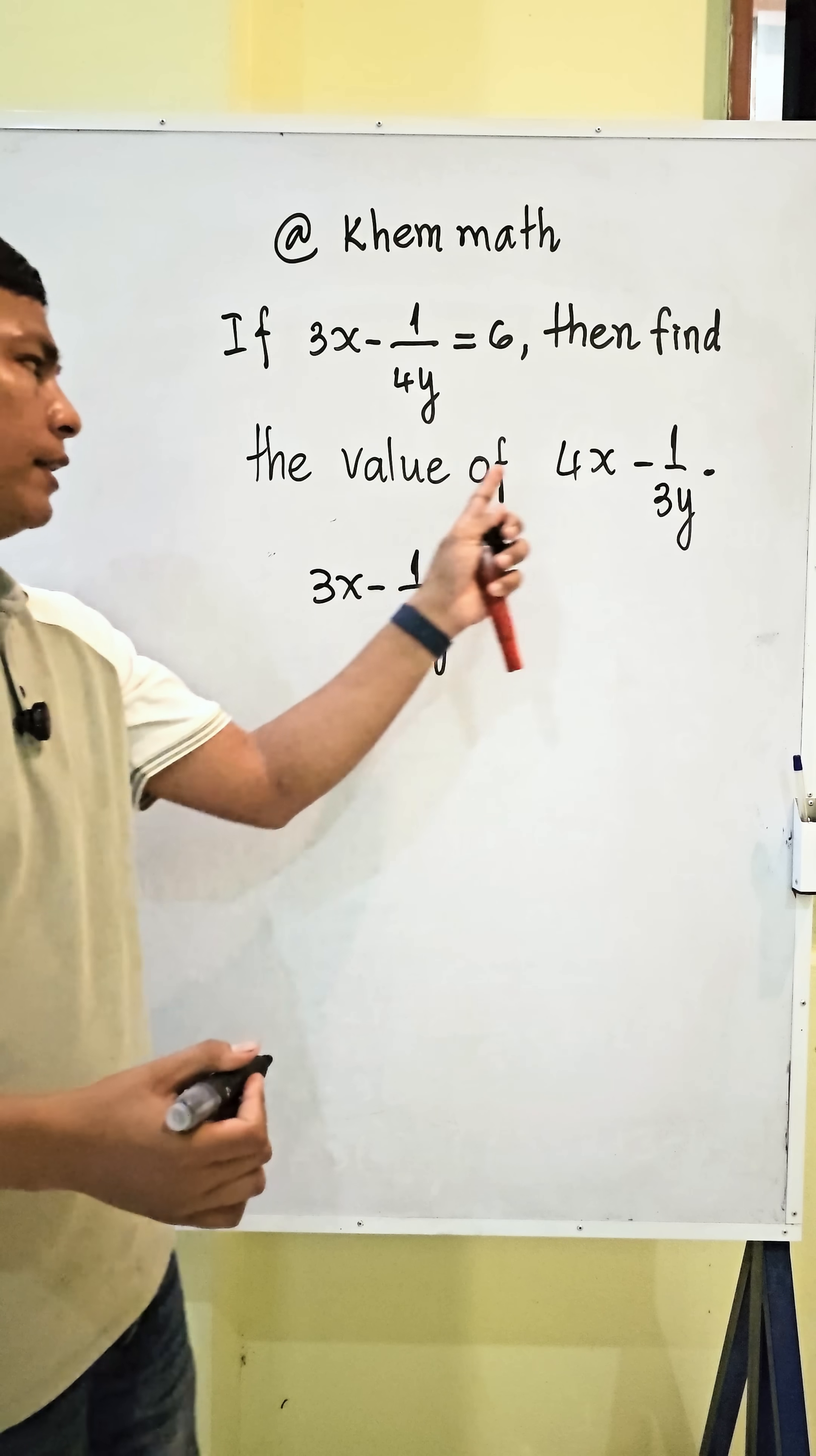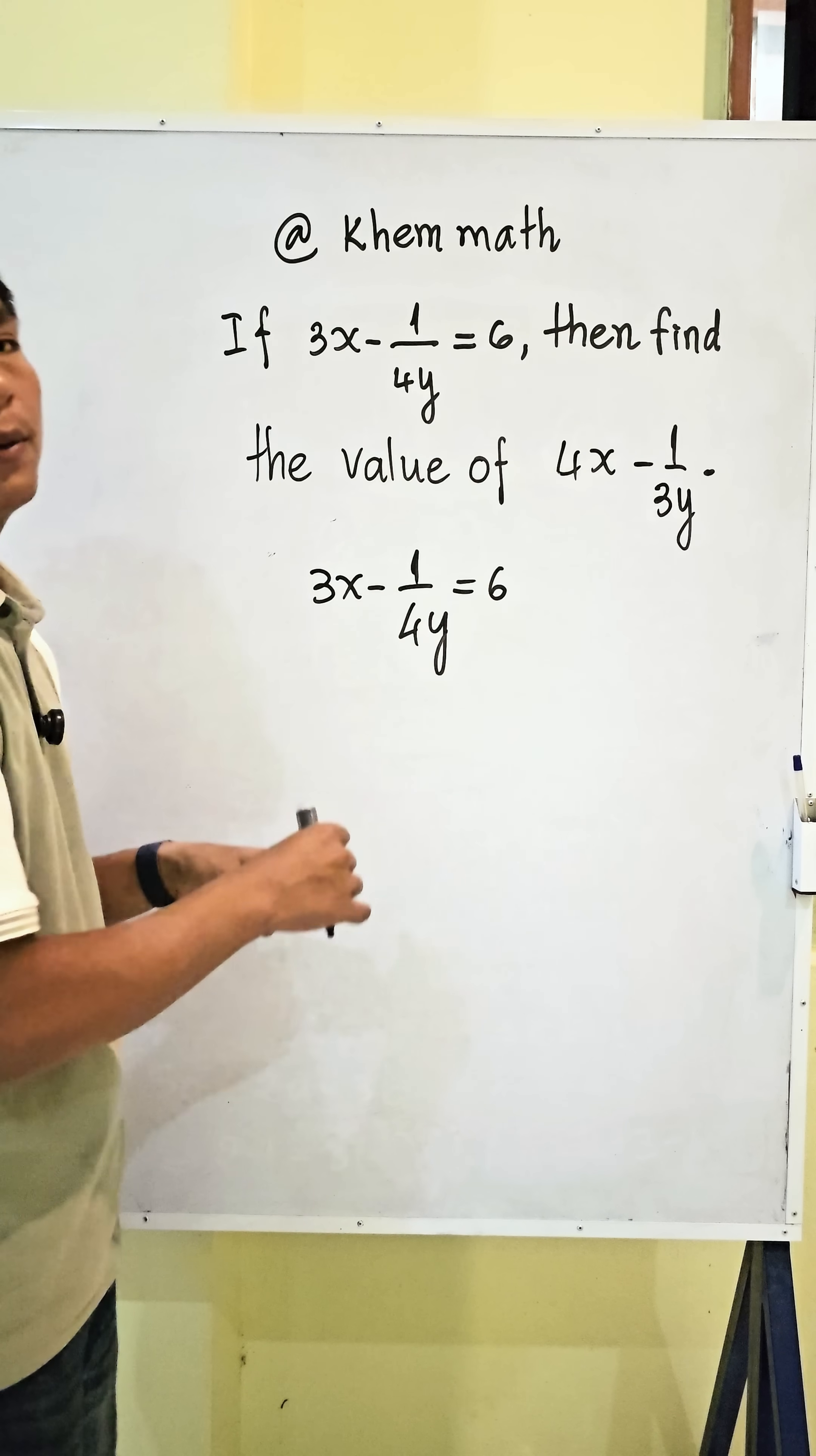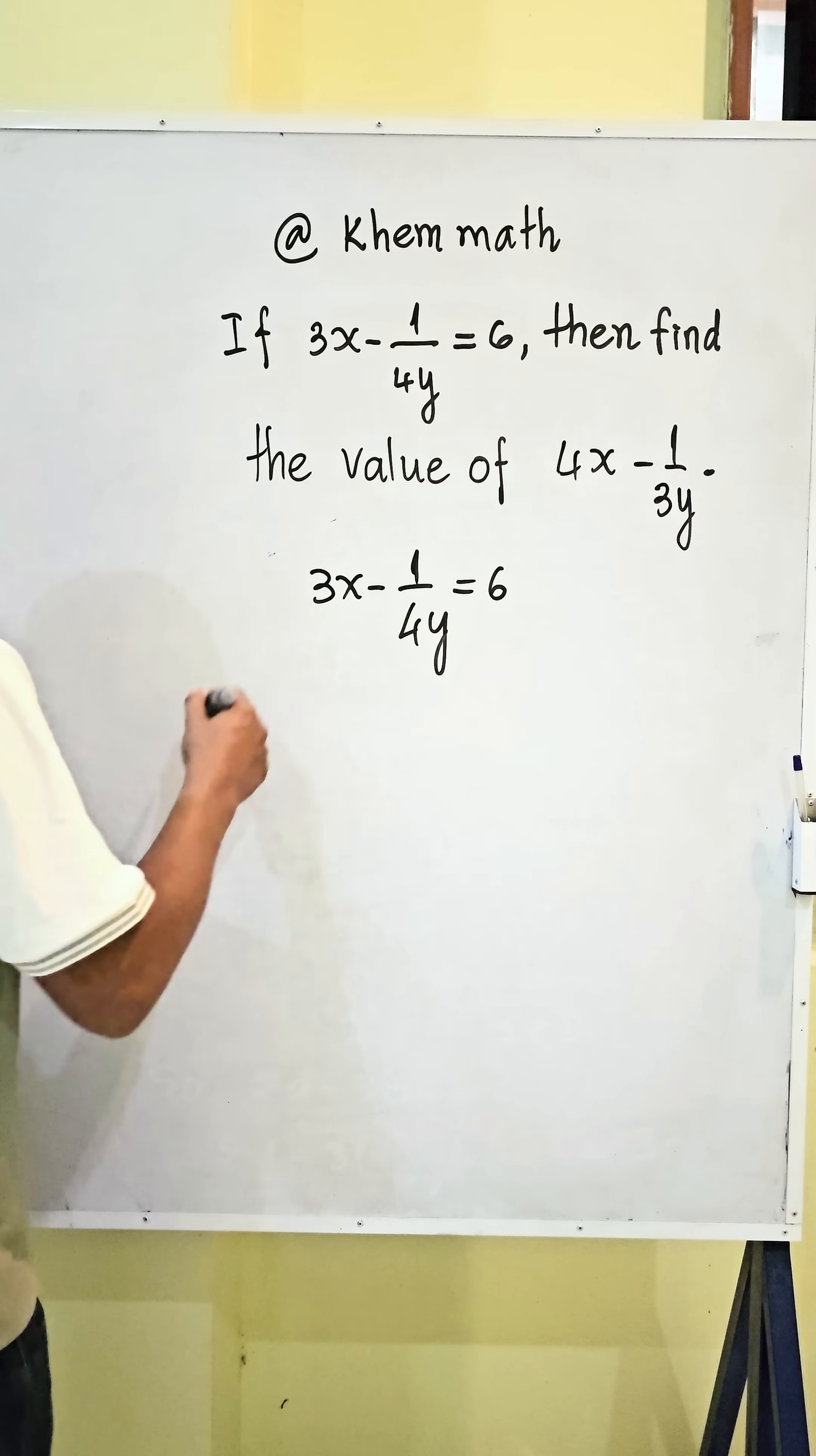And now, we see this 4, and here is 3. So, we must multiply both sides of this equation with 4 divided by 3. So, multiply both sides of this equation with 4 divided by 3.